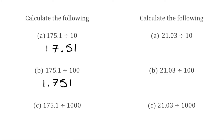For this final part, we've got 175.1 divided by 1,000. We move all the digits three places to the right, so the 5, the 7, and the 1 all make it over to the right-hand side. We need a zero in the units column, then our decimal place, and then all the digits — 175 and the 1 that was originally on the right-hand side. So our answer is 0.1751.